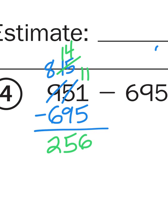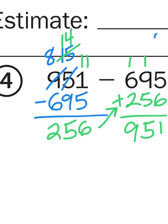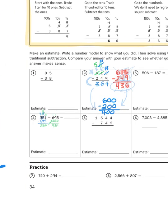But if you're still not convinced, I can just take the 256, add it back to the 695, and that should get me back to 951, which it does. Take your time. Walk through each step. Check your work. Confirm that your answer is correct by adding the two smaller numbers back together to see if it gives you the number you started with at the top.